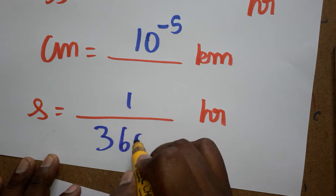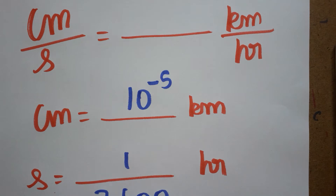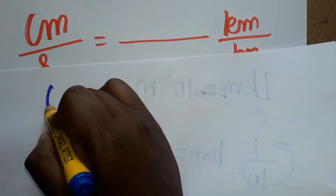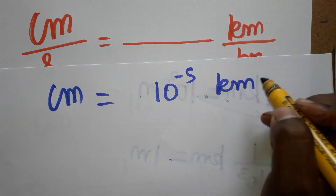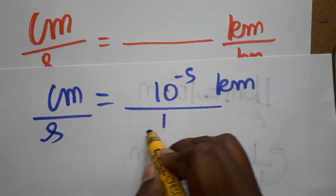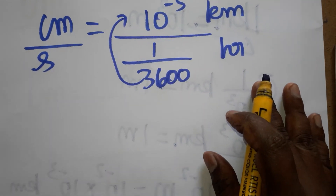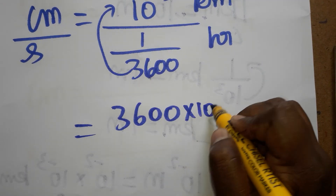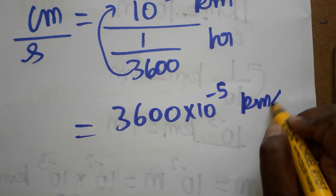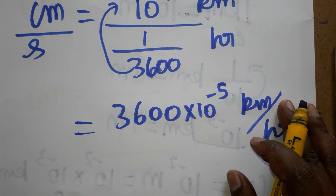Now we will do the final conversion. Centimeter per second to kilometer per hour: centimeter becomes 10^-5 kilometer, and second becomes 1/3600 hour. Since 1/3600 is in the denominator, it comes to the numerator as 3600. So we get 3600 into 10^-5 kilometer per hour.